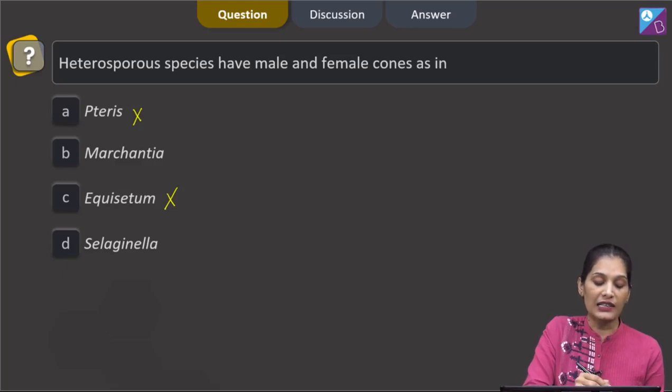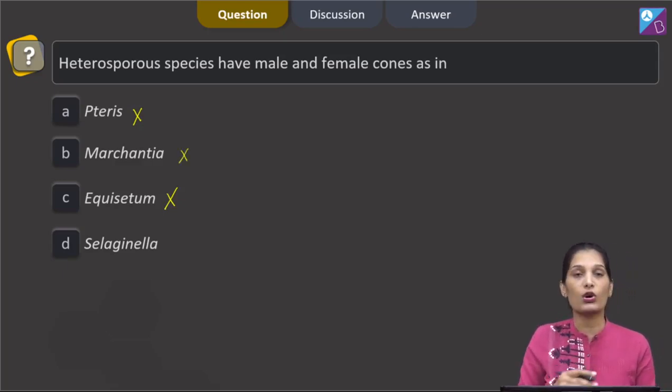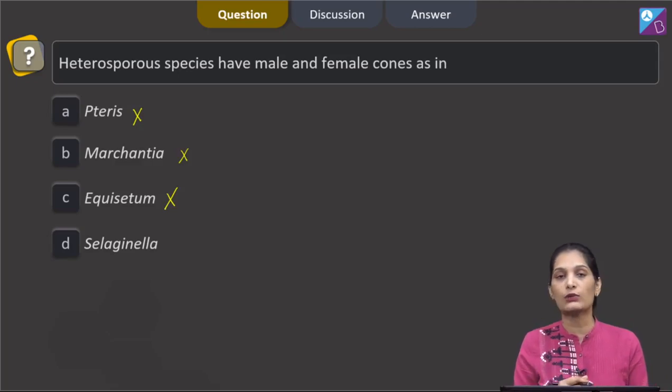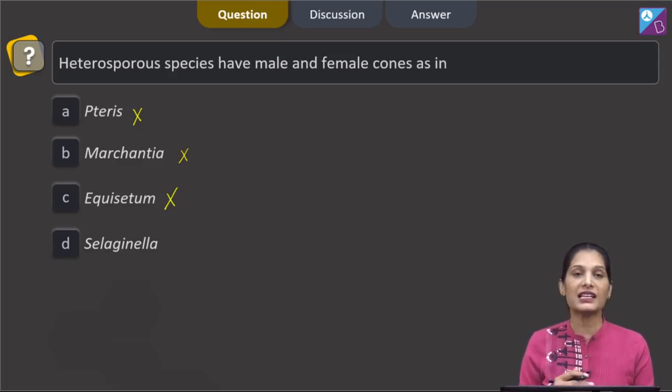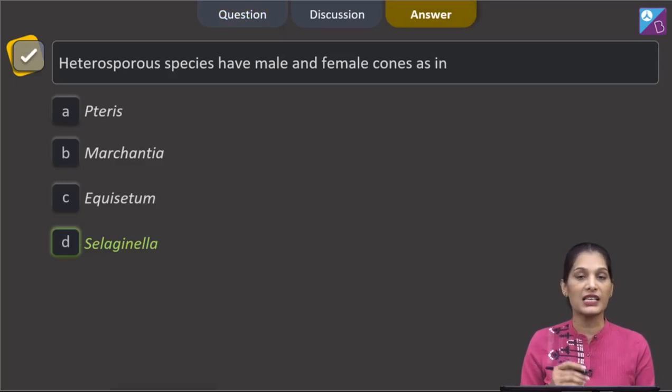Marchantia is a liverwort and definitely it will be homosporous because all liverworts, and broadly you can say bryophytes, all are homosporous. Selaginella is the only heterosporous species which is present over here and Selaginella has both male and female cones. So the correct option for the given question is option D which says Selaginella.